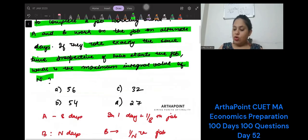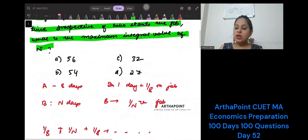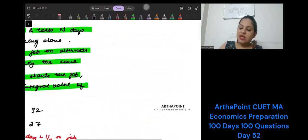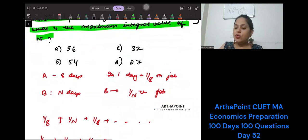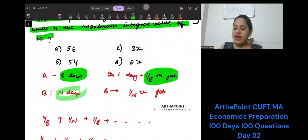Okay, just think about this. Suppose A starts the job. How much work can A do in one day? A takes 8 days to complete the job, so in one day A can do 1/8 of the job. B takes N days to complete the job, so in one day B can complete 1/N of the job.